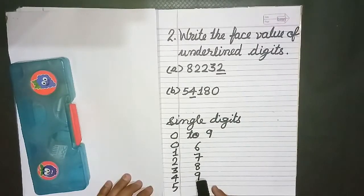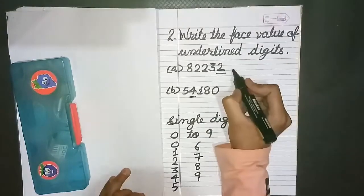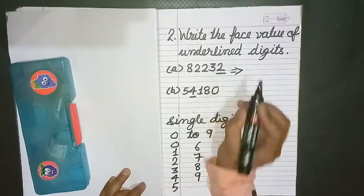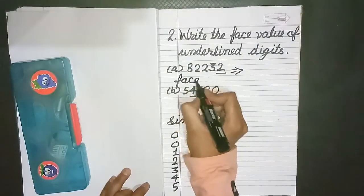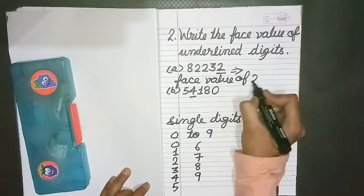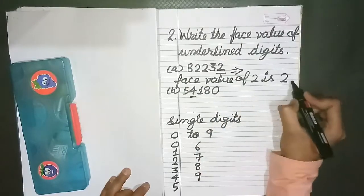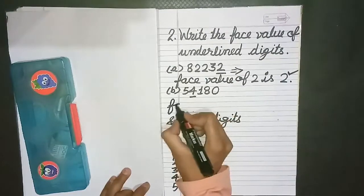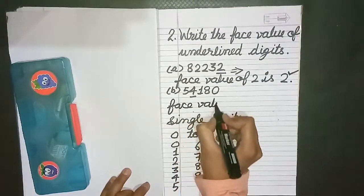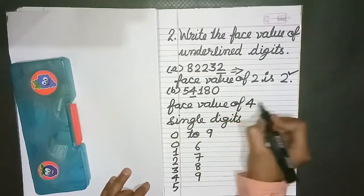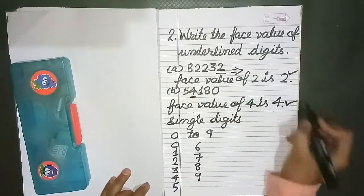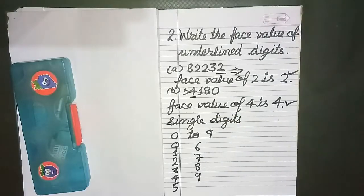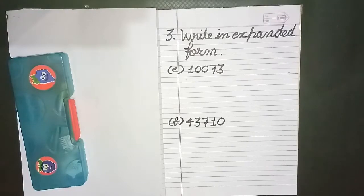So here part A is 82232. So here face value of underlined digit, means of 2, is 2. Similarly we have part B: 54180. Here face value of underlined digit, means of 4, is 4. So this is the answer.